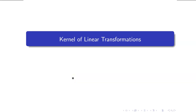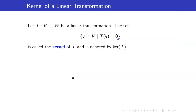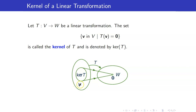In this lesson, I am going to discuss the kernel of linear transformations. Suppose T is a linear transformation from V to W. If I collect all the elements in V that get mapped to the zero vector in W, that set is called the kernel of T and is denoted by ker(T).